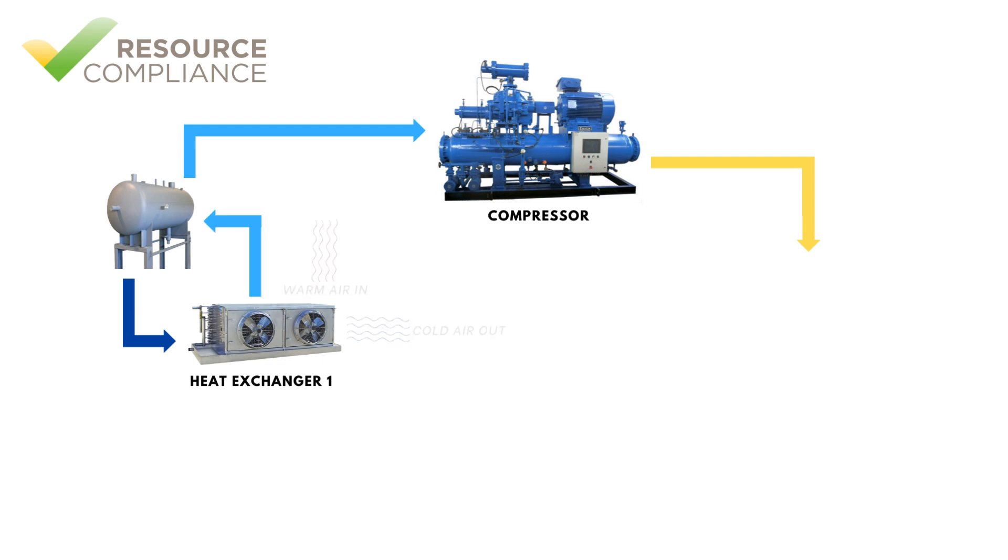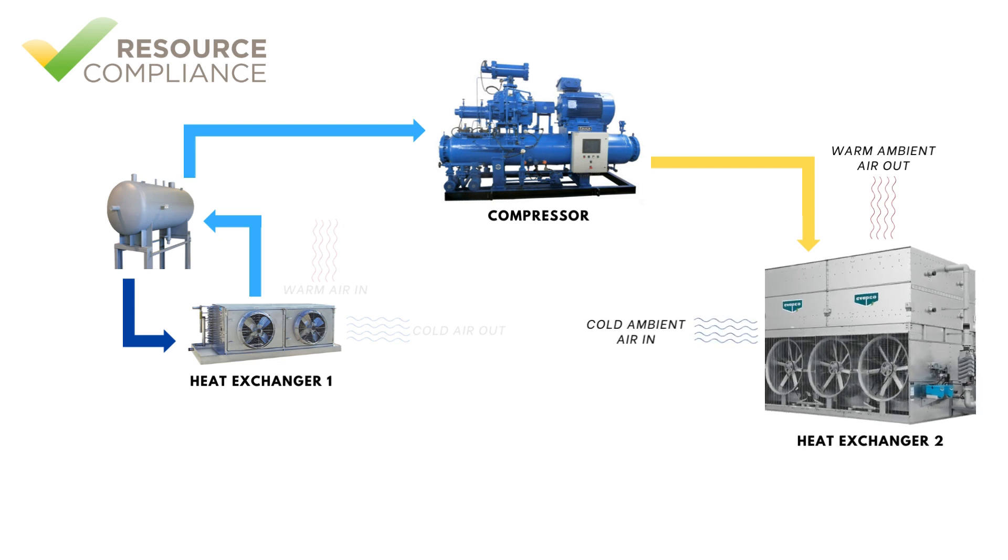Instead of venting vapor from the evaporator to atmosphere, let's install a pipe connecting the evaporator outlet back to the original container. The vapor will enter the container and pass through the compressor suction. We still have the issue of compressor discharge. Our current configuration discharges to atmosphere. Instead, let's employ a second heat exchanger that connects to the compressor outlet.